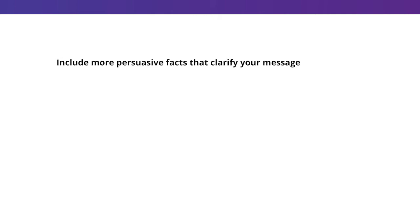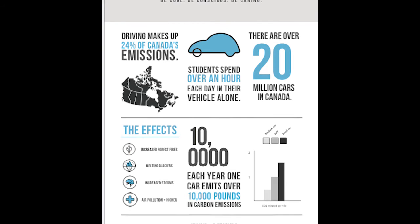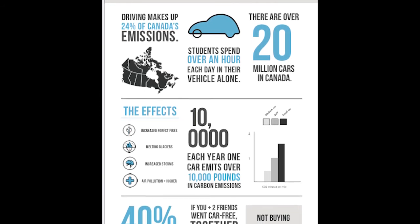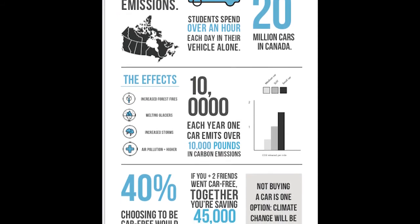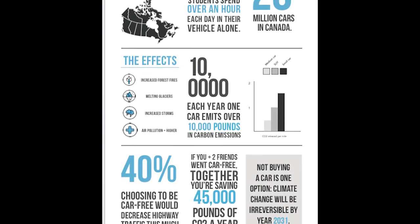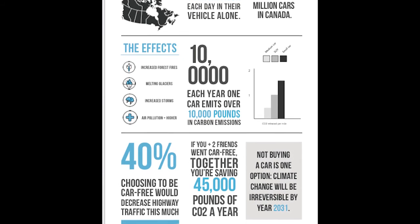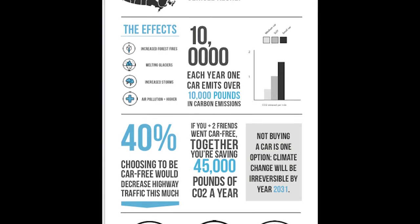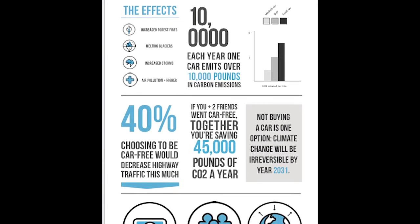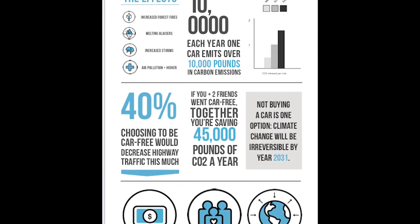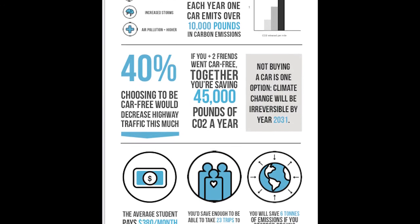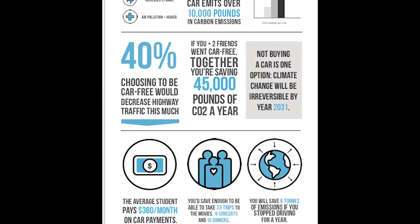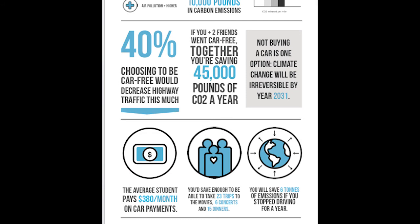Four: include more persuasive facts that clarify your message. Again, ensure to revolve your facts around your ultimate goal. For example, I am trying to persuade students to go car-free, so I provided facts on the general environmental benefits of going car-free. By understanding that my target is students for this infographic, I did some research on the financial and general benefits of the lifestyle I am endorsing. For example, a student would be able to attend many more events and luxuries if they used alternate modes of transportation.